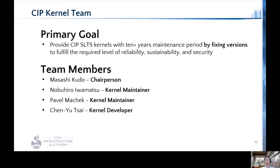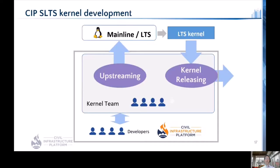We are highly motivated to work on the goal and to maintain CIP kernels safe and sound. Because we follow the upstream-first principle, upstreaming and kernel releasing are two main pillars of our activities. In general, patches are committed to mainline first, then backported to each stable kernel. However, for some reason, such backporting might not be done on some specific stable kernels — it may be because patches are irrelevant, or because backporting is not trivial.